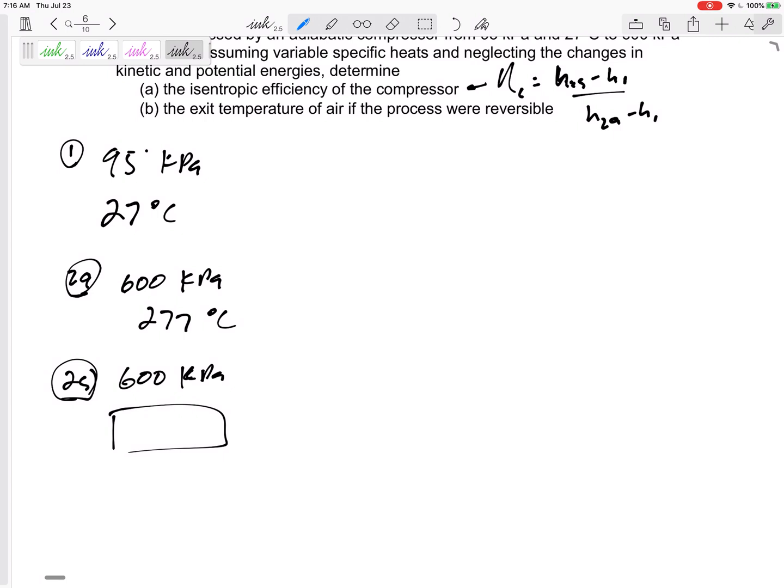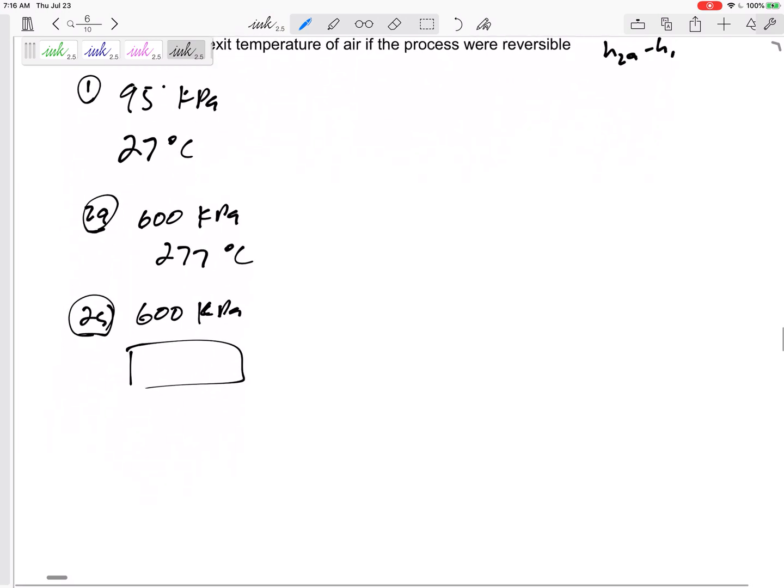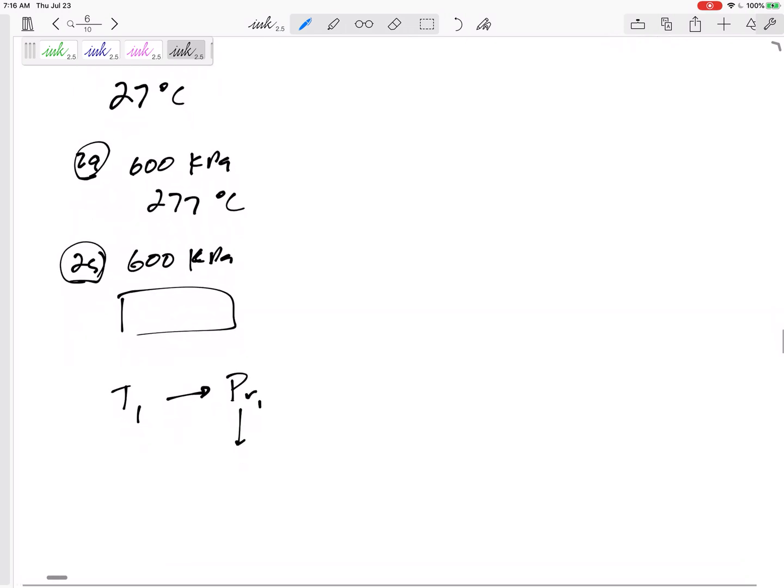All right, but we want to use variable specific heats. So do you remember that process, right? If we know T1, we can find the relative pressure. If we know the ratio of relative pressures, we can find PR2. We can get T2. This is isentropic. Remember, this equation is for isentropic. PR1 over PR2 equals P1 over P2, isentropic. Only isentropic. I can't emphasize that enough.